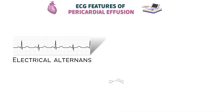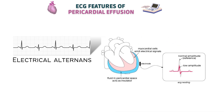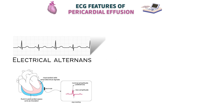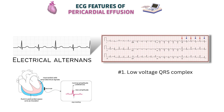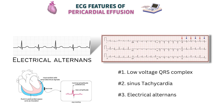The basic reason for ECG changes in pericardial effusion is the increased distance of the heart from the ECG electrodes due to fluid accumulation. The basic ECG features in pericardial effusion include: first, low-voltage QRS complexes because of that increased distance; second, the presence of sinus tachycardia; and lastly, the peculiar phenomenon known as electrical alternans, which is especially found when the effusion is large.